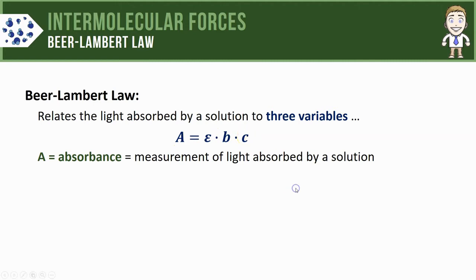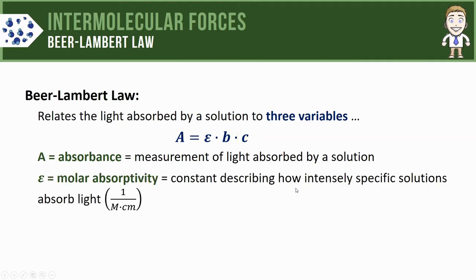The first is a constant value called molar absorptivity (ε). It's a constant, which means you'll probably be provided this number if you ever have to plug it into an equation. This constant describes how intensely a specific solution will absorb a specific color of light.